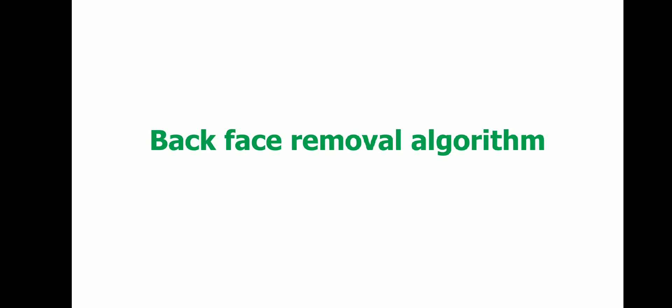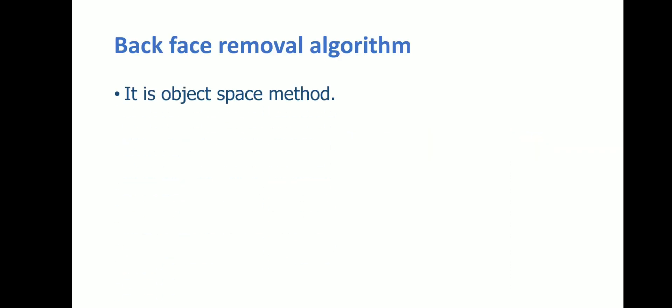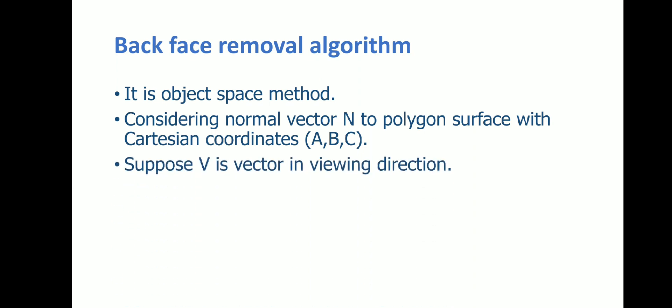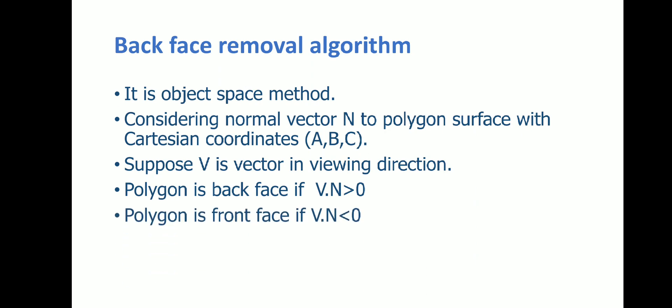We will now discuss the first algorithm for hidden surface removal: the backface removal algorithm. It is an object space type of algorithm where we compare a polygon or part of an object with others to identify whether it is visible or non-visible. In this algorithm, we consider a normal vector N to the polygon surface having Cartesian coordinates a, b, c, and we consider a vector V in the viewing direction. Based on the dot product V·N: if V·N is greater than 0, the polygon is a backface and we hide that polygon.